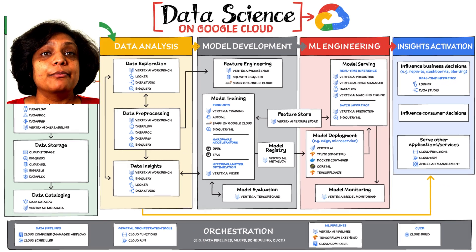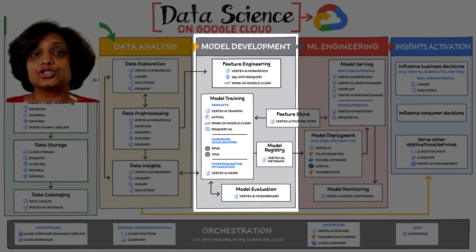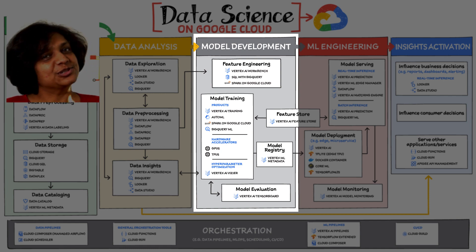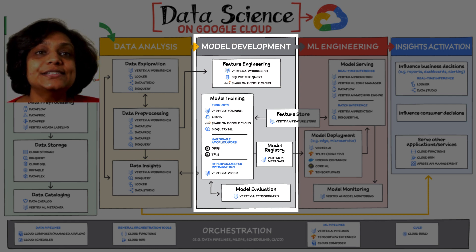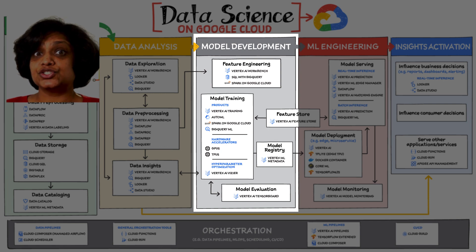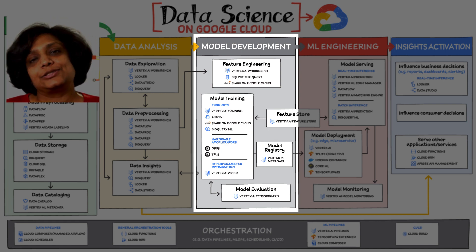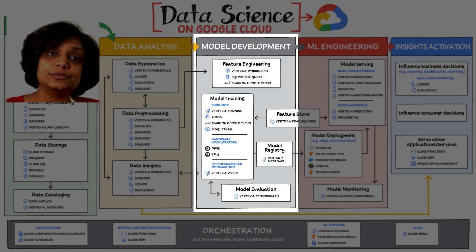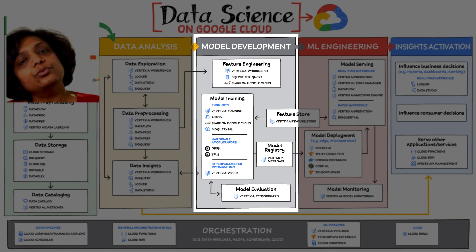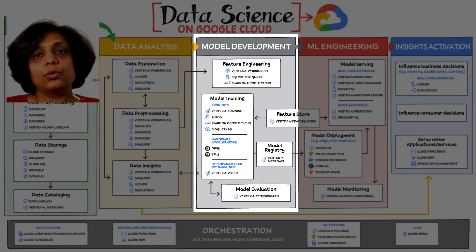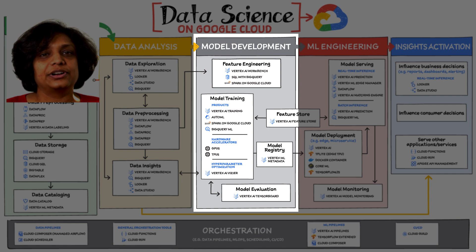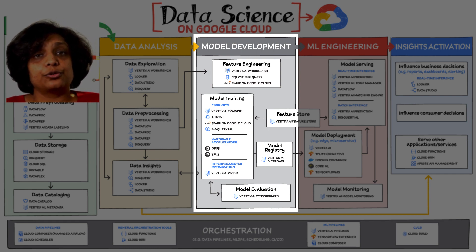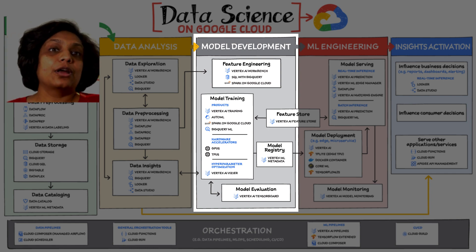Third is model development. From linear regression to XGBoost, from TensorFlow to PyTorch, the model development stage is where machine learning starts to provide new ways of unlocking value from your data. Experimentation is a strong theme here, with data scientists looking to accelerate iteration speed between models without worrying about infrastructure overhead or context switching between tools for analysis and tools for productizing models with MLOps.